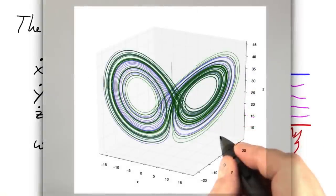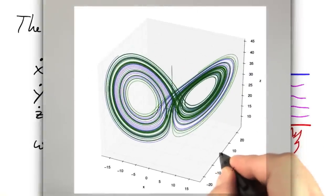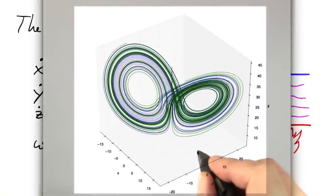When we plot the solutions of the Lorenz system in 3D, this is what we get. A very intricate butterfly-like pattern.